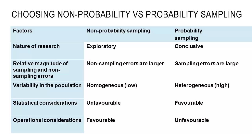A quick summary of non-probability versus probability: probability we would consider to be more conclusive, whereas non-probability is more of an exploratory type of sampling. There's more potential for bias in non-probability, and particularly if we're going to be trying to do any quantitative methods, the statistical considerations tend to favour probability sampling. Non-probability sampling tends to be easier and cheaper operationally. Sometimes we may use non-probability sampling to find interview participants and then probability sampling for our more quantitative questionnaire and surveying.